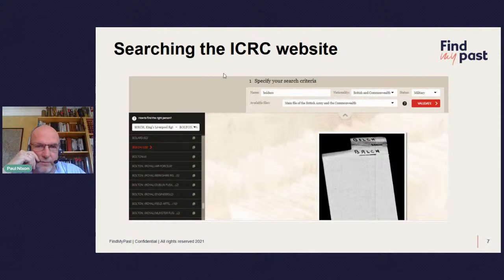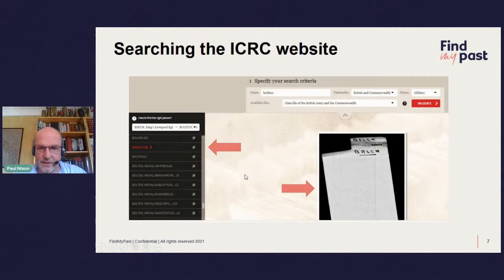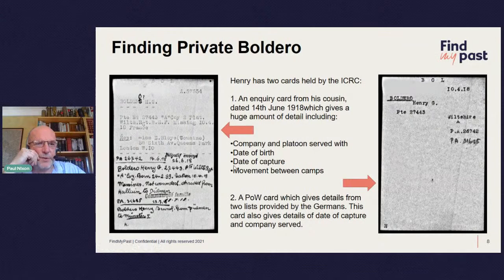Looking for Henry Boldoreau: you go to the ICRC website, type in his name 'Boldro,' and you're presented with a screen showing all the names on the left-hand side. He falls within the highlighted section. You then click on that and start scrolling through the images until you find him. He has two cards: one generated when he was reported missing, and the second — his Prisoner of War card — which gives details of the camps he was in. The page references on the right show PA 26742 and 31685.